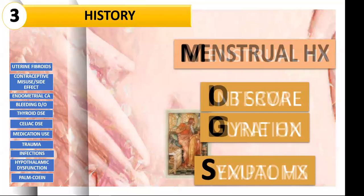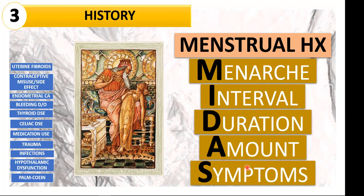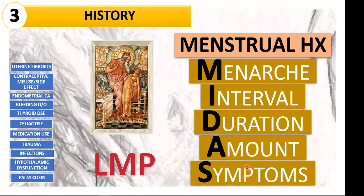As for the menstrual history, remember the mnemonic MIDAS — associate King Midas of Greek mythology as the king of menstruation. We ask the age of first menstruation (menarche), interval (if regular or irregular), duration (how long the cycle is), amount (how many pads she used), and any associated symptoms like dysmenorrhea. Also ask about subsequent menses. What I want you to remember most is the importance of LMP — the last menstrual period. This is the first day of the patient's last menses.